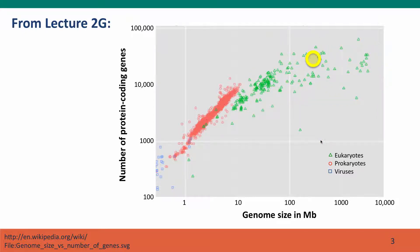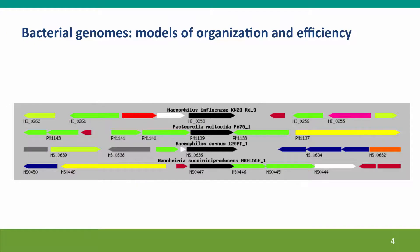Why is this? In contrast, it doesn't need to be that way. Here's a short segment — about 10 kb — of some closely related bacterial chromosomes. The arrow lines are genes, and what is immediately noticeable is how little space there is between the genes. The genes are snugged up close — there are a few longer gaps, but mostly they're packed in very tightly.